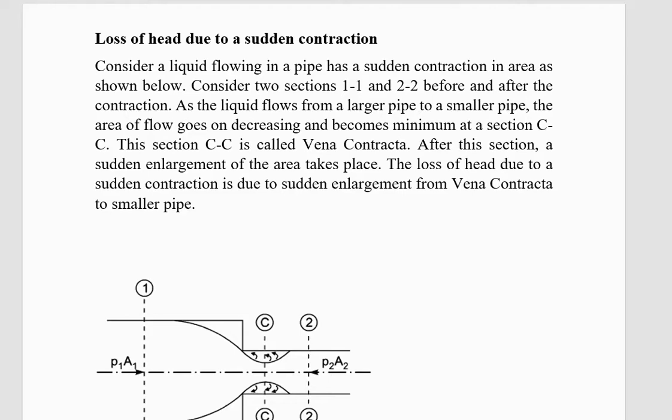Therefore, let's consider a liquid flowing in a pipe that has a sudden contraction in area as shown below. Consider two sections 1-1 and 2-2 before and after the contraction. As the liquid flows from a larger pipe to smaller pipe, the area of flow goes on decreasing and becomes minimum at section C-C.